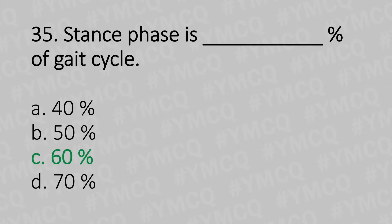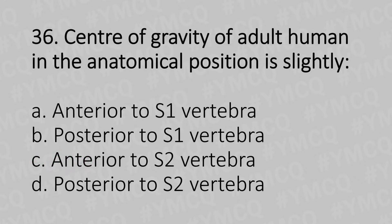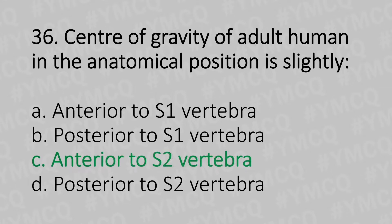Moving to our 36th question. The centre of gravity of the adult human in anatomical position is slightly: Option A: Anterior to S1 vertebra. Option B: Posterior to S1 vertebra. Option C: Anterior to S2 vertebra. Option D: Posterior to S2 vertebra. And the answer is Option C: Anterior to S2 vertebra.